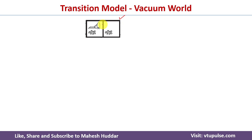At this particular state we can apply three different actions in the vacuum world. The first is the Left action. Since the AI agent is already present in the left location — location A — we cannot move further left. So the state remains the same.